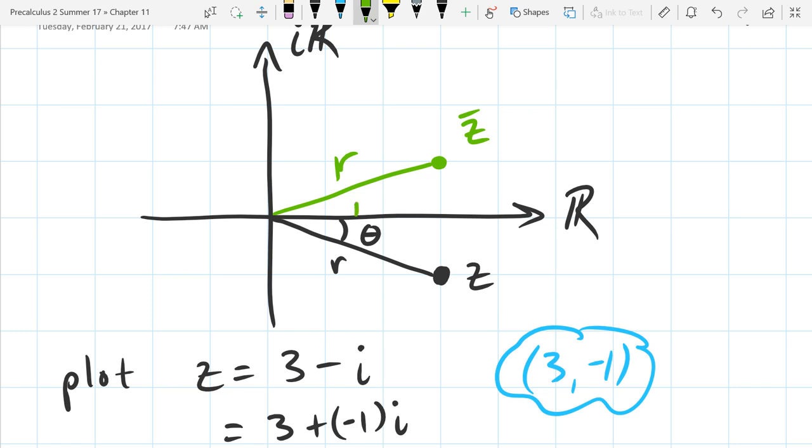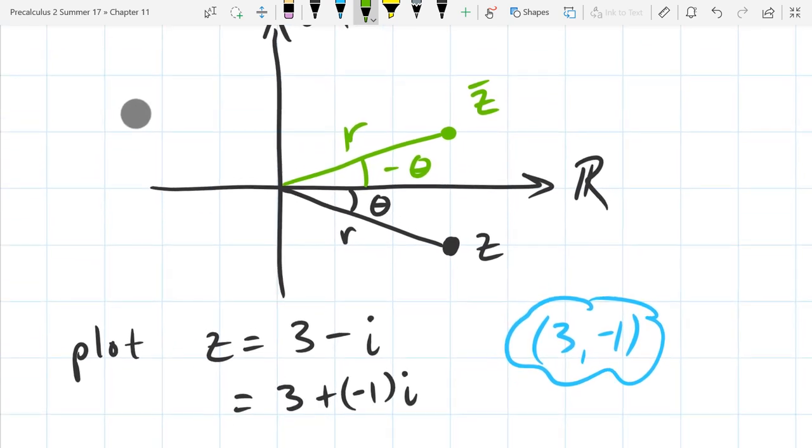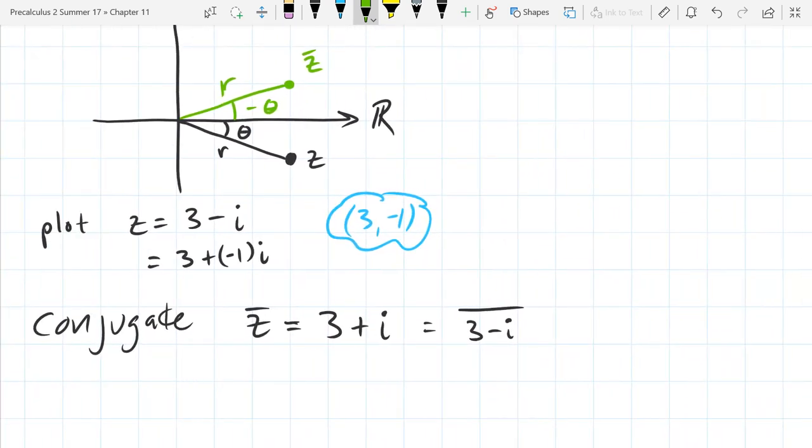But our angle definitely not the same because we don't end up in the same direction. So it can't be the same angle. But it's definitely related to theta. Basically if theta goes in this case clockwise, the opposite direction is negative theta going counter clockwise.